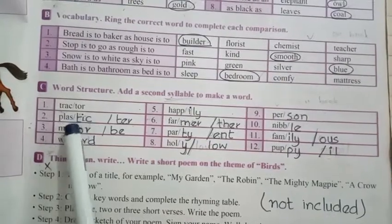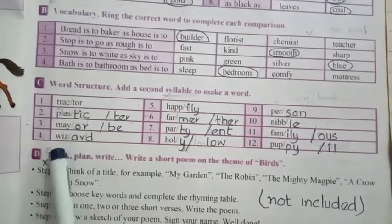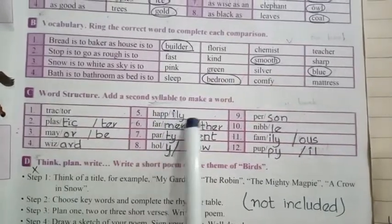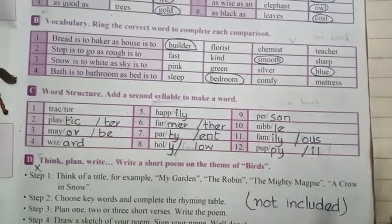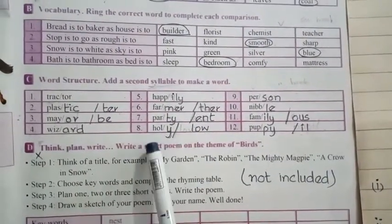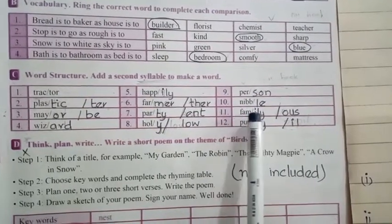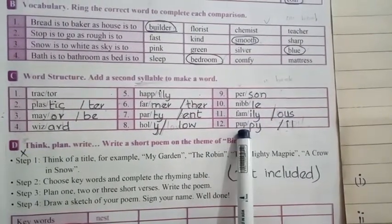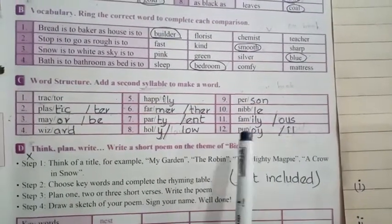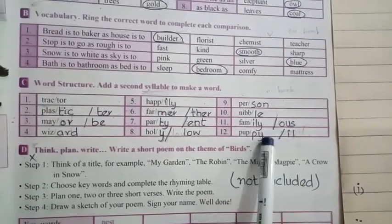Plastic or plaster. Mayor, maybe, wizard, happily, farmer, farther, party, parent, holy, hollow, person, neighbor, family, famous, puppy and pupil. So the first syllable was done for you and you added a second syllable to make a word.